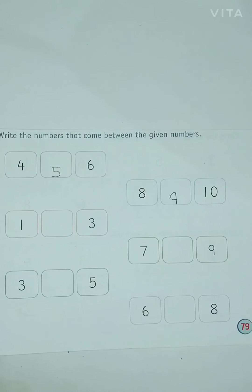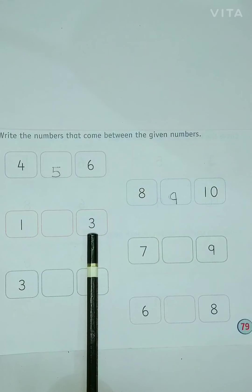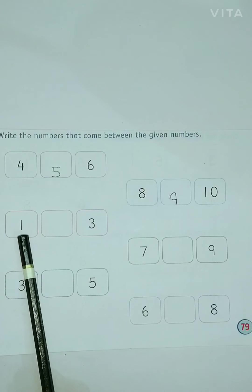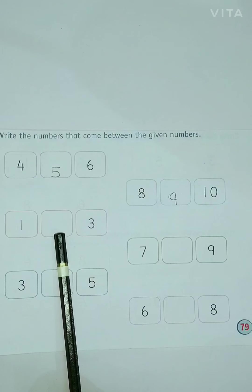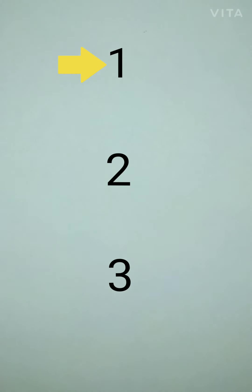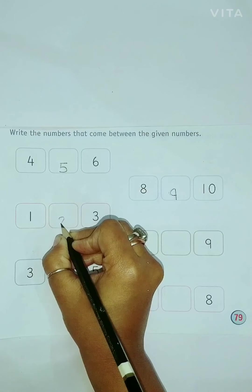Now, children, tell me which number is this? 1. And which number is this? 3. Which number comes after 1 and before 3? Let us count: 1, 2, 3. Which number comes after 1 and before 3? 2, right? Now we will write 2 over here.